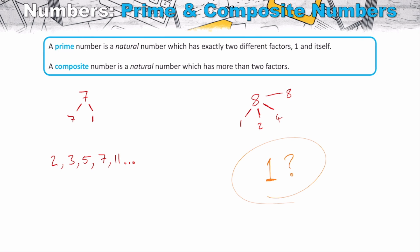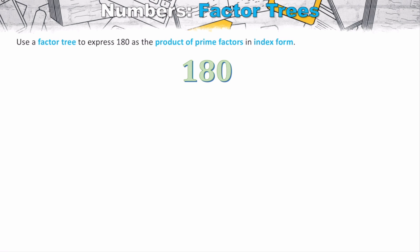We're interested in prime and composite numbers because we can break composite numbers down in terms of their primes. We'll use a factor tree to look at the number 180 and represent it as a product of prime factors. We start with the smallest prime number, which is two, and check whether 180 divides by two. It does — dividing 180 by two leaves us with 90.